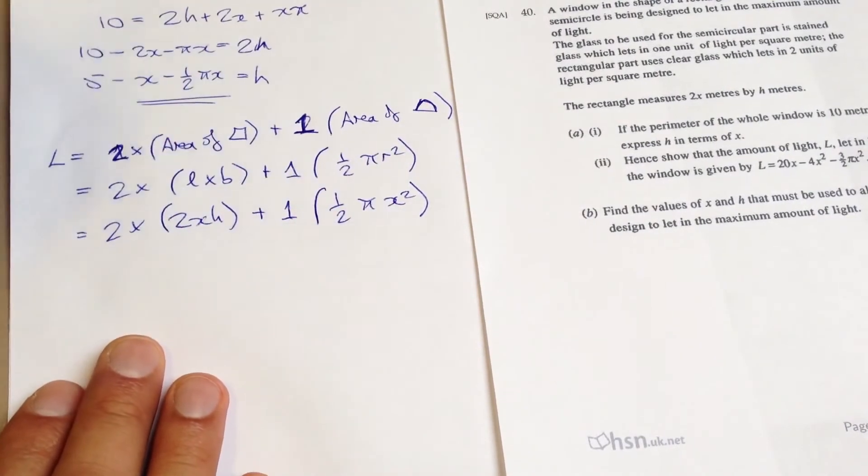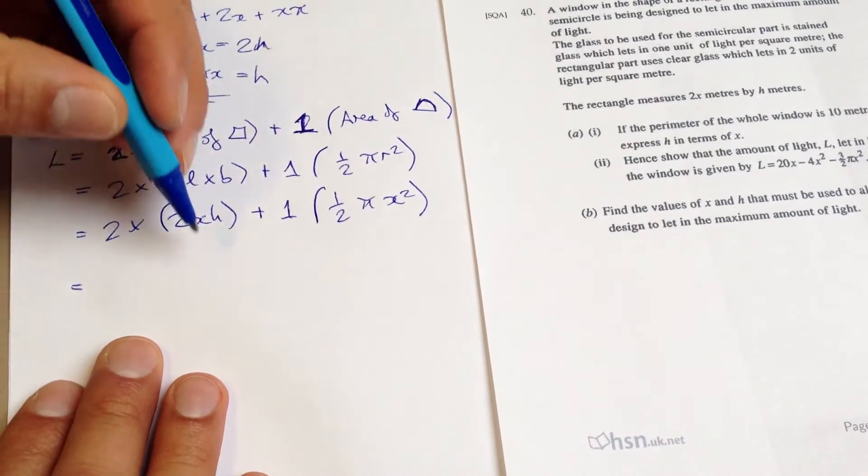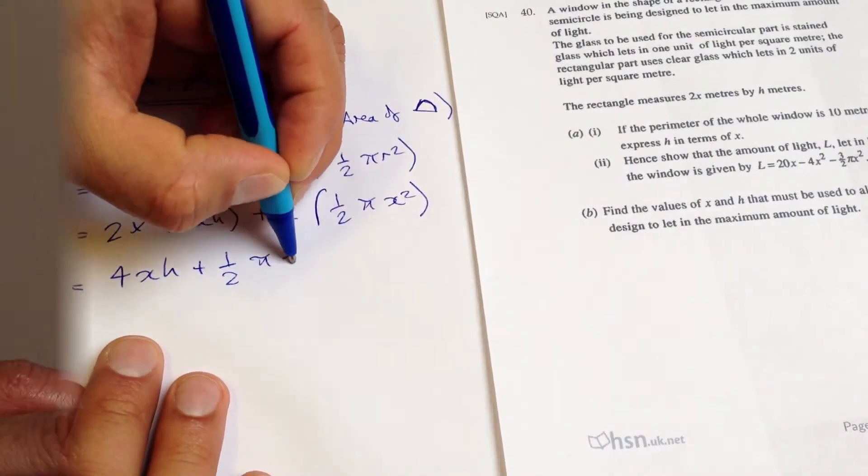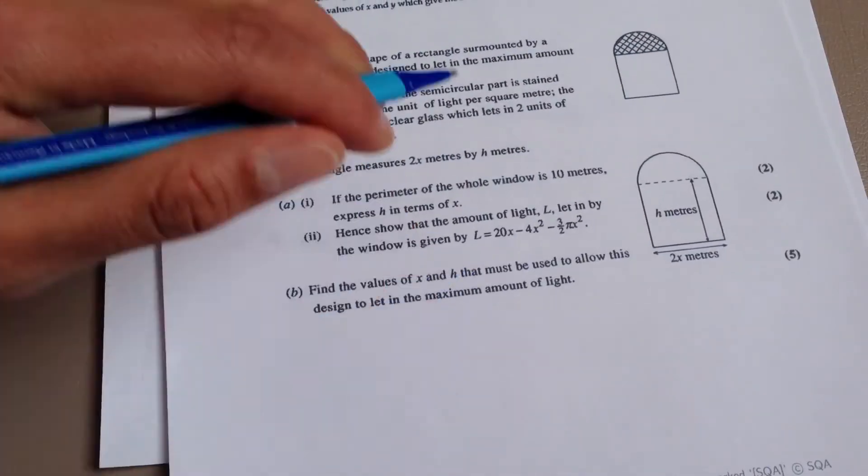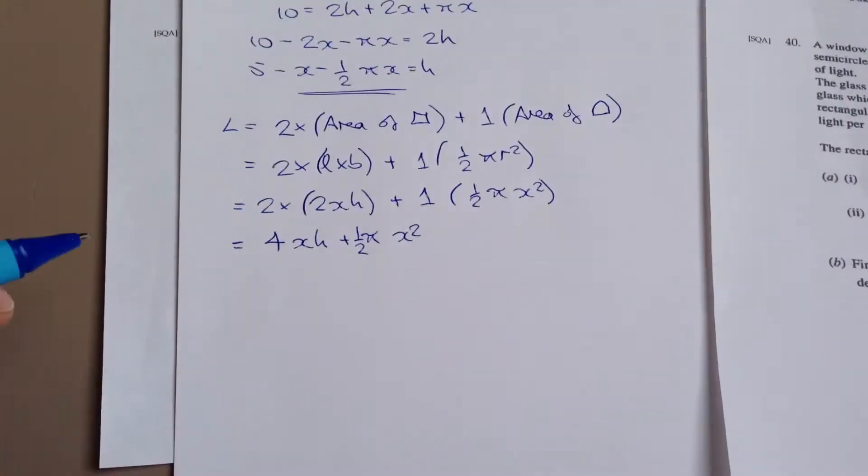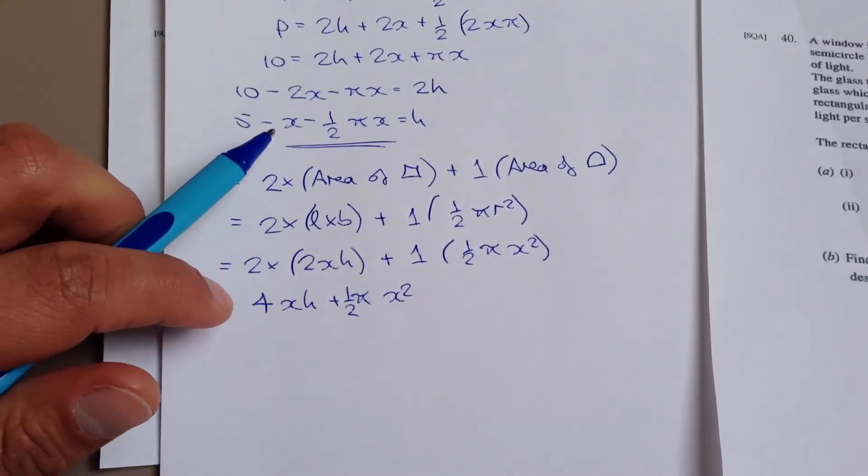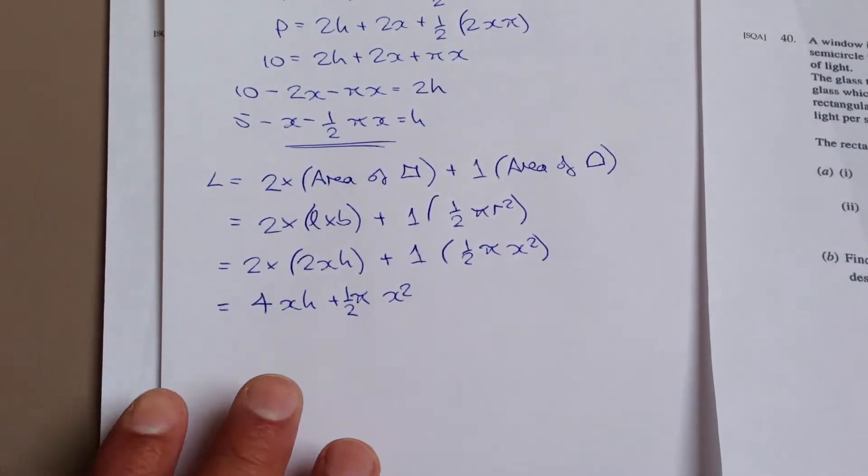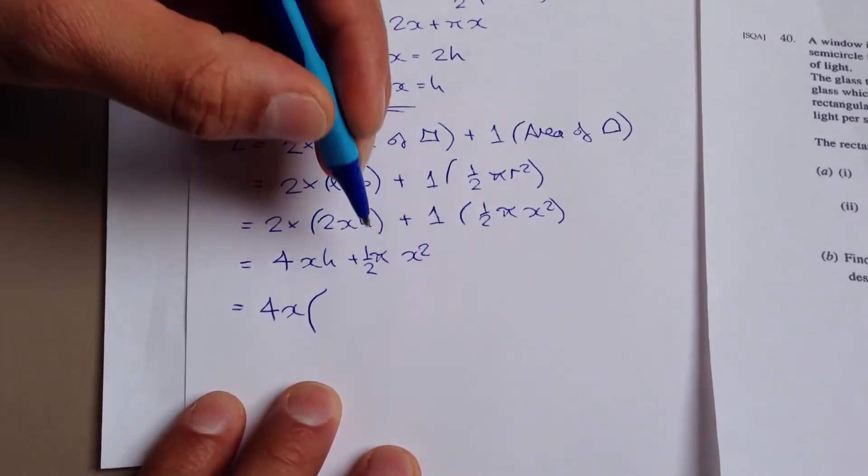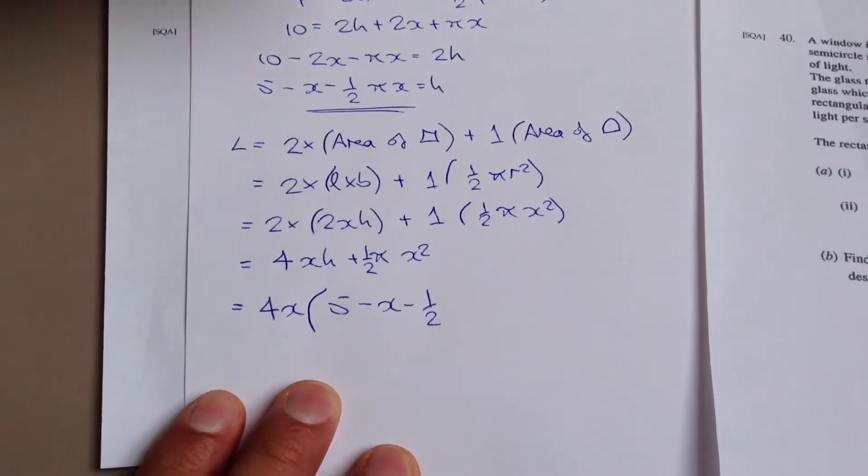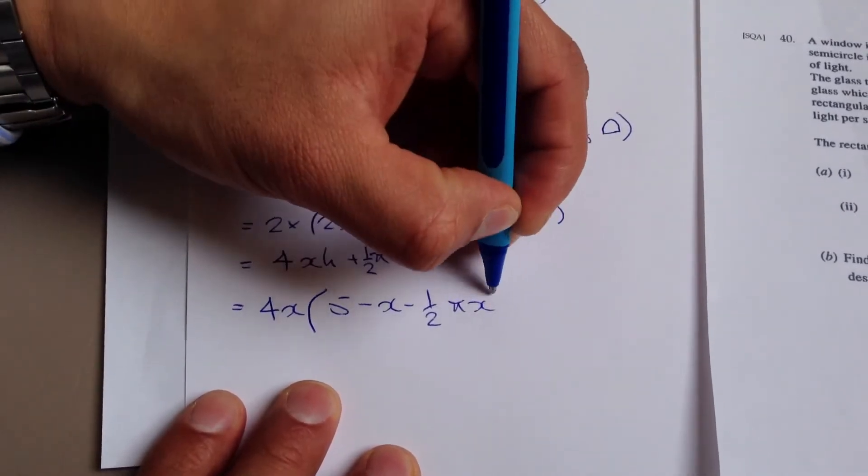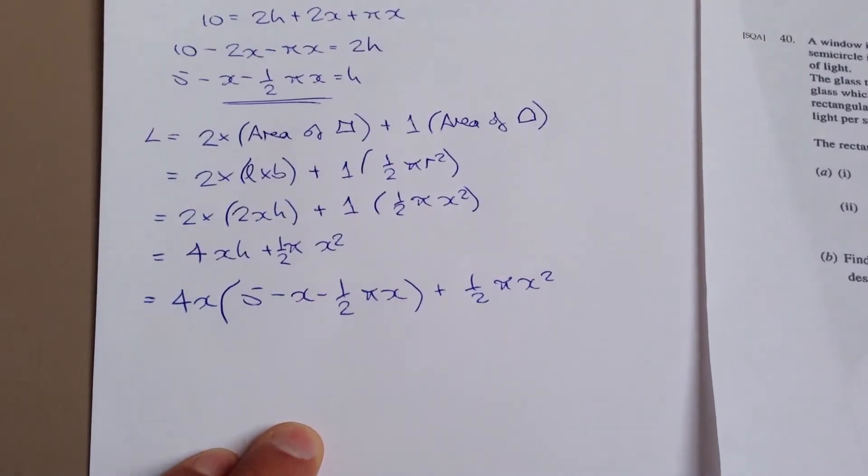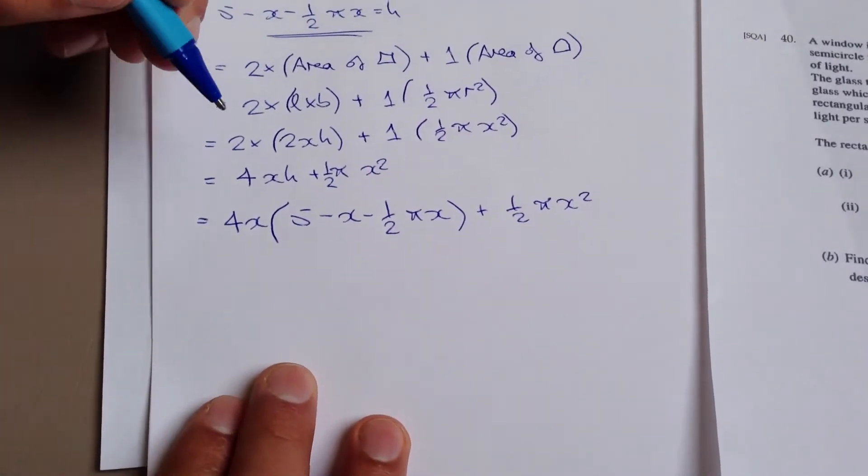Tidying this up a little bit will give me 4xh plus a half pi x. But then they look at this and they realize, oh wait, I do need to in fact get rid of the h. So how do we do that? Well, we know that h is in fact this here, 5 minus x minus a half pi x. So how about we take that and sub it in for that h there. So let's go ahead and do that. That's going to be 4x multiplied by 5 minus x minus one half pi x. And that's h there plus and of course we've still got this half pi x squared over here.